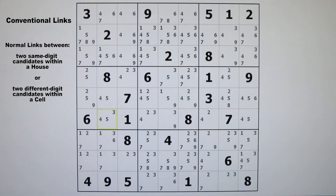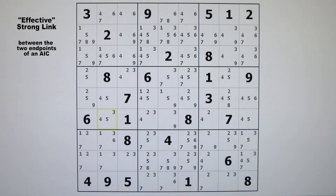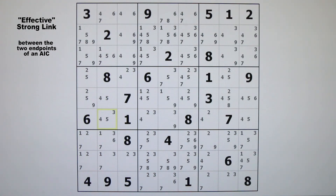Remember, these will all be what I call conventional links, simply meaning normal links between two same-digit candidates within a house, or between two different-digit candidates within a cell. The reason I call these conventional links is because when we start making chains and loops, the rules will have a couple of interesting and surprising twists that we will cover later. There is indeed a strong link between the two endpoints of an alternate inference chain, and I call this type of link an effective strong link, because it is not a strong link in the conventional sense, where the two candidates have to see each other.